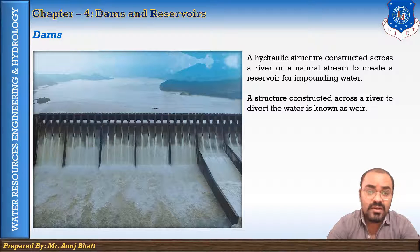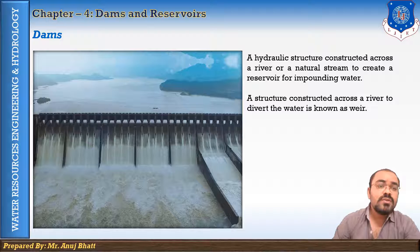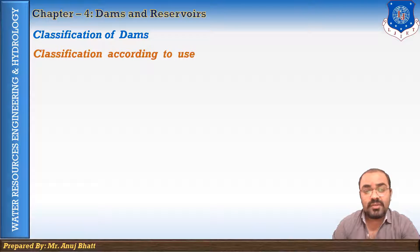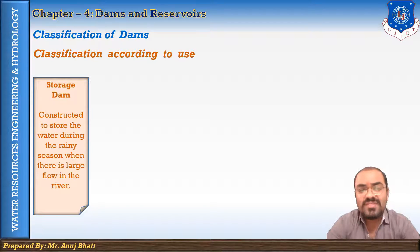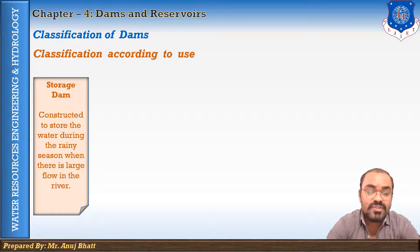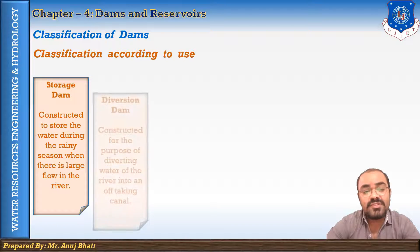The classification of dams according to use: First is the storage dam. A storage dam is constructed to store water during the rainy season when there is a large flow in the river, and the stored water can be utilized later during the period when the flow in the river is reduced or at the time of drought. Examples include gravity dams, earthen dams, or rock fill dams.